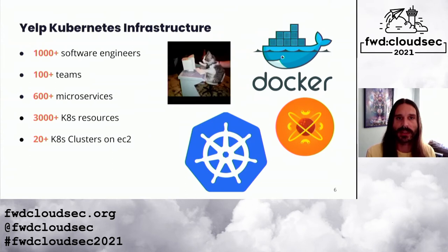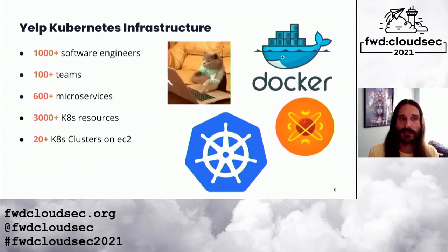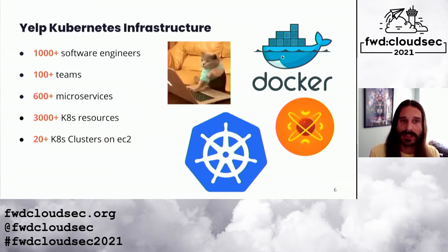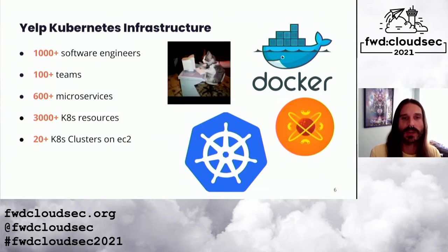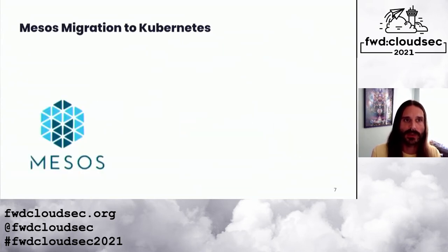It takes a lot of infrastructure to support an application of that scale. Today we have more than a thousand geographically distributed software engineers across a hundred different teams. We have a containerized microservice architecture managed by an open-source platform-as-a-service framework we built called Pasta. Under the hood, Pasta uses Kubernetes as the container orchestration framework to manage thousands of workloads across a few dozen Kubernetes clusters running on EC2, with custom namespaces for web microservices, batch jobs, Cassandra, Kafka, Flink, Spark, and various other workloads.